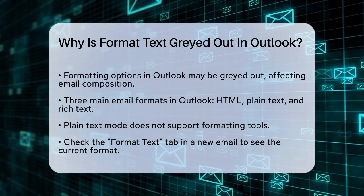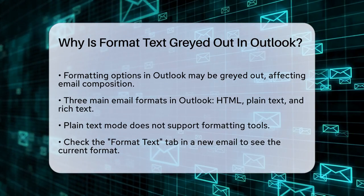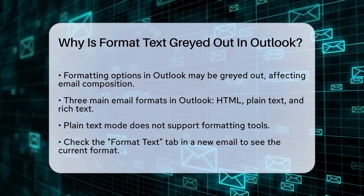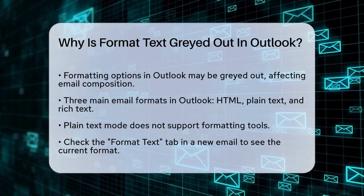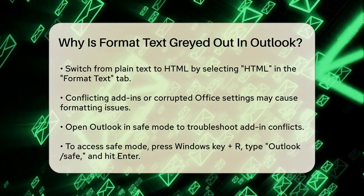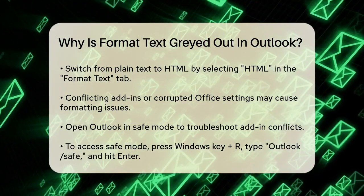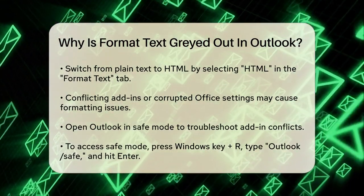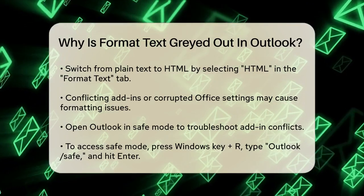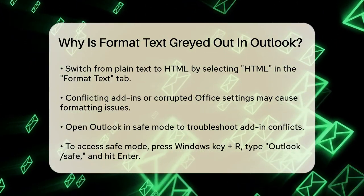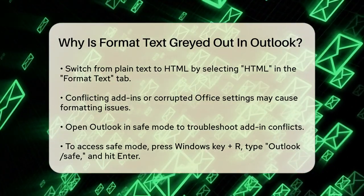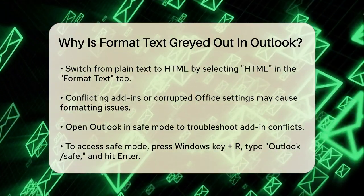When you're in plain text mode, you won't be able to use any formatting tools because plain text emails don't support formatting. To check if this is the problem, open a new email or the email where the formatting options are grayed out. Look for the Format Text tab, see if you can switch the format from plain text to HTML, and click on HTML to change the format. This should immediately make all the formatting tools available to you.